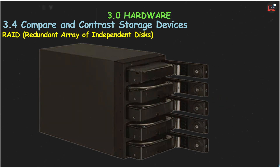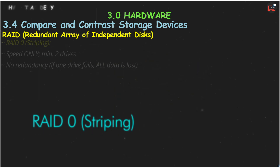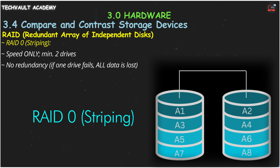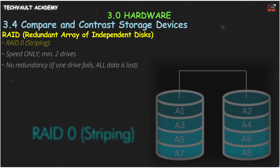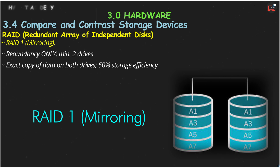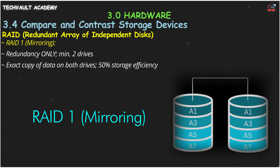Let's quickly review the common RAID levels. RAID 0, striping, is the speed daemon. Data is split across at least two drives — it's super fast, but has zero redundancy. If one drive fails, all data is lost. RAID 1, mirroring, is all about safety. Data is duplicated exactly onto two drives. If one drive fails, you have a perfect copy on the other. It's highly redundant, but uses only half your total storage space.